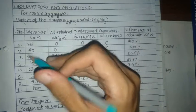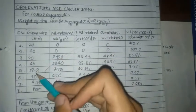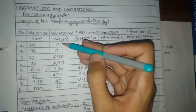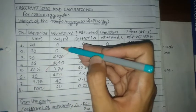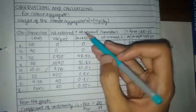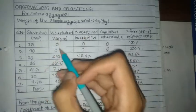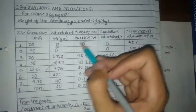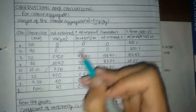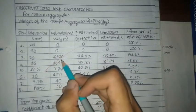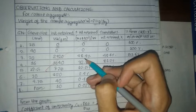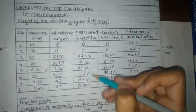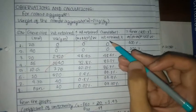We have different sieve sizes: 75, 40, 20, 16, 12.5, 10, 4.75 mm, and the last zone being a pan. For each sieve size we have recorded the weight retained. The percentage weight is calculated by multiplying the retained weight by 100 and dividing by the total sample weight of 5 kg. For example, 2420 g into 100 divided by 5000 g gives 48.4%.